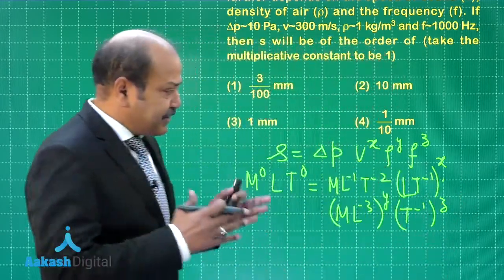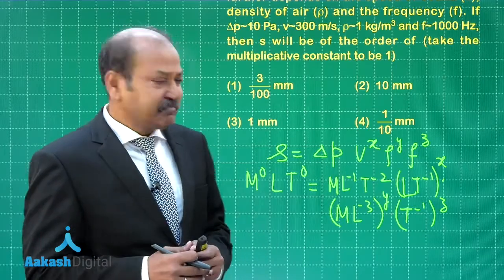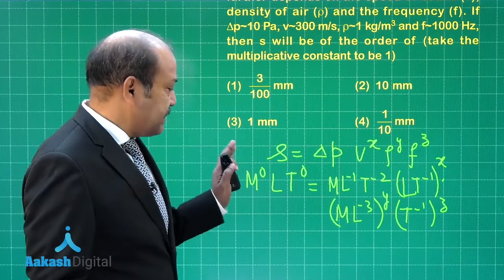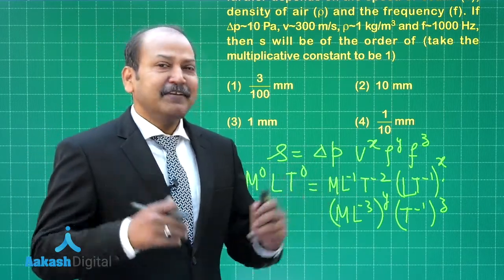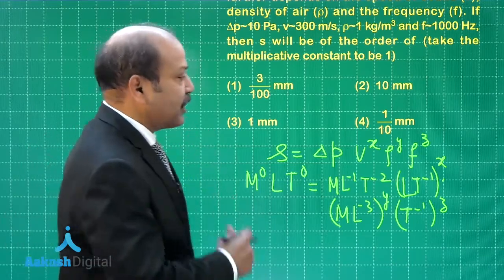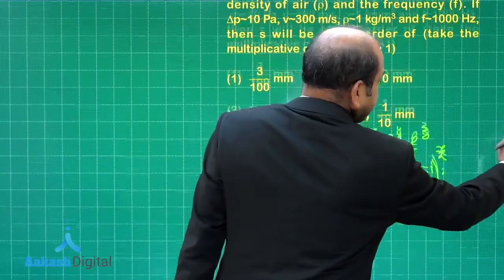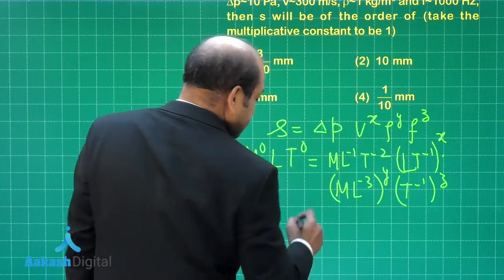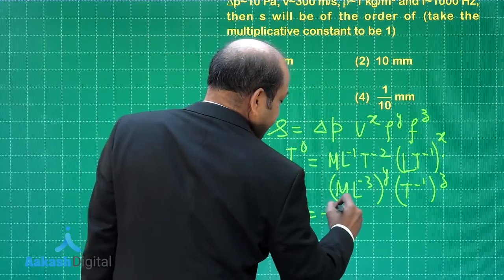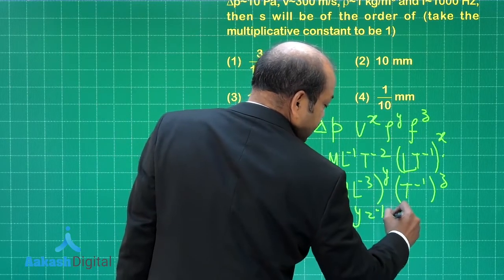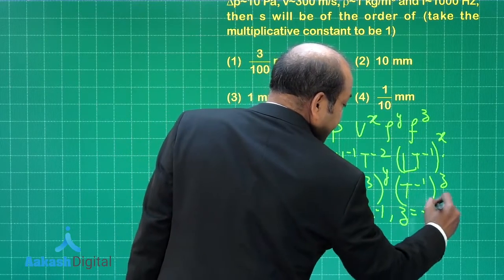So there are three unknowns x, y and z. We will get three equations by equating the powers of m, l and t and the values of x, y and z can be solved. In fact, when you solve it the values of x, y and z each of these values comes out as minus 1. So we are getting x is equal to minus 1, y is equal to minus 1 and also z is equal to minus 1.